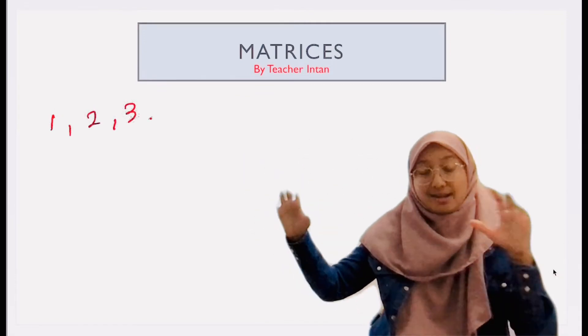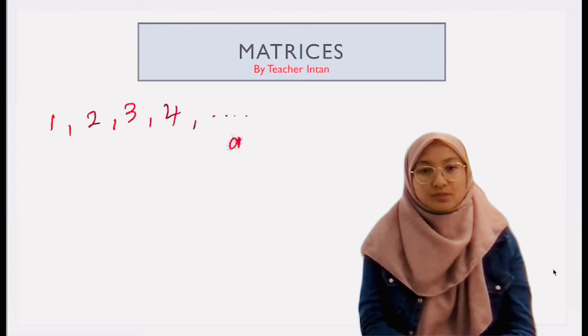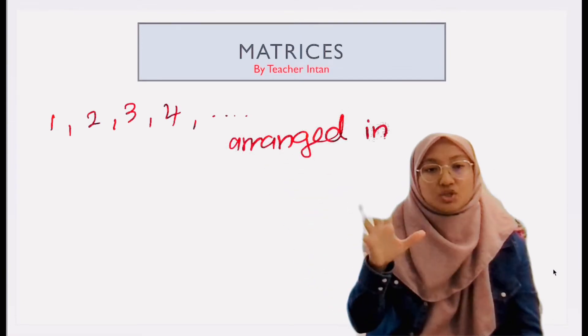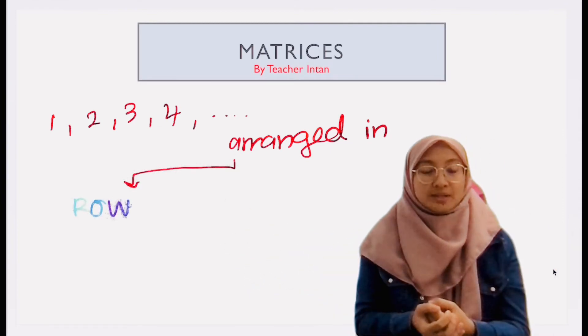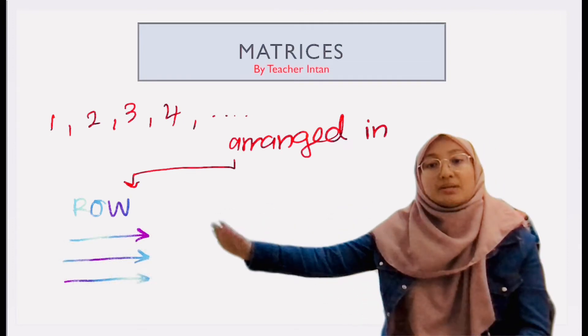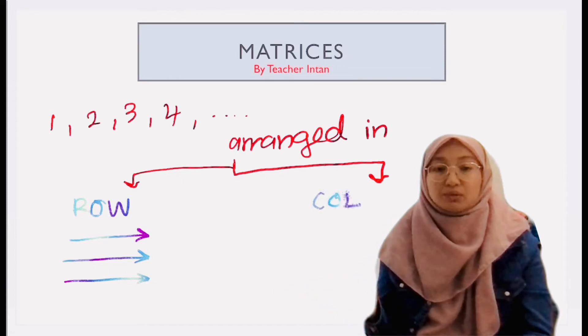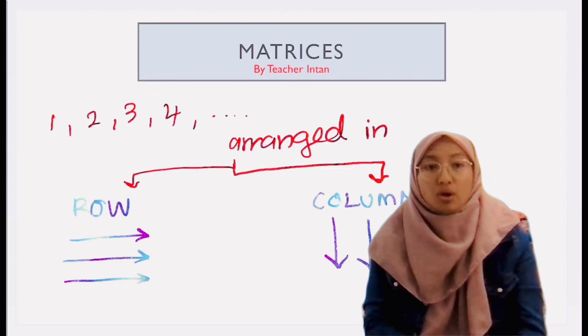So what is matrix? Matrix is arrangement of a set of numbers in certain form. So in what form? So the numbers are arranged in rows or by columns. So when numbers are arranged in row, the numbers are arranged in horizontal form. That is what we call row. And when the numbers are arranged vertically, we call it column.